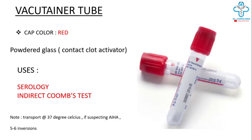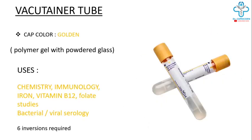The red color vacutainer tube has a clot activator, therefore serum studies are done. It is used for serology and indirect Coombs test. Note: if you are suspecting autoimmune hemolytic anemia, transport this tube at 37 degrees Celsius. Five to 6 inversions are required.